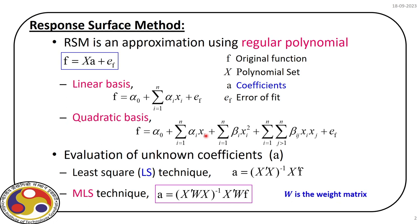Once we fit this, our main task is to find these coefficients. If we have a quadratic polynomial without cross terms, then alpha_0, alpha_i, and beta_i are the unknown coefficients — altogether 2n+1 unknown coefficients that we need to solve. Using the least square technique we find the unknown coefficients a, and once obtained, we develop this response surface to replace the original performance function.